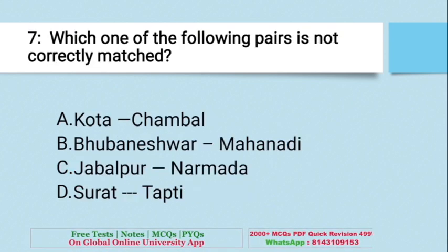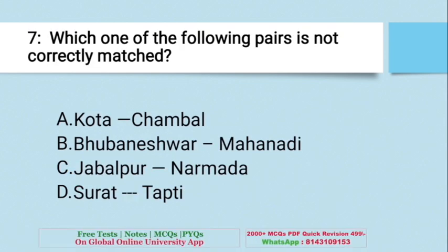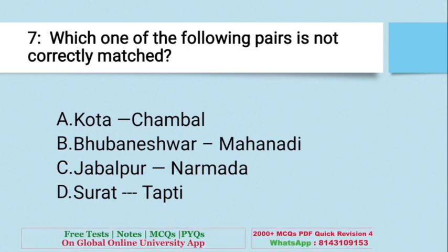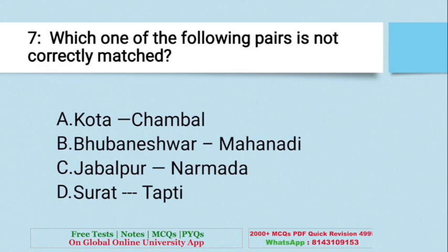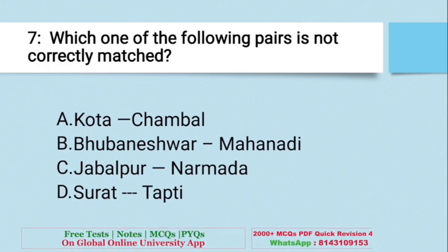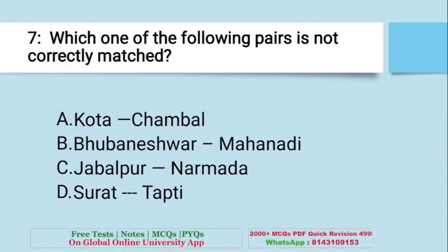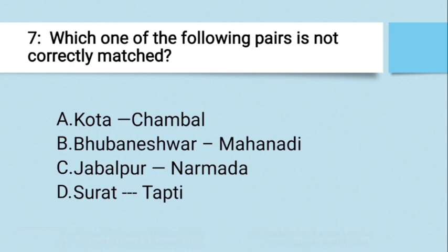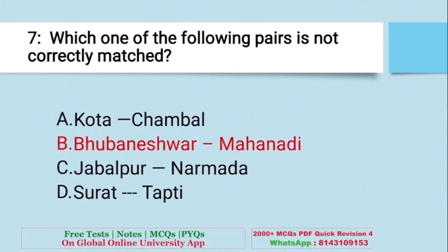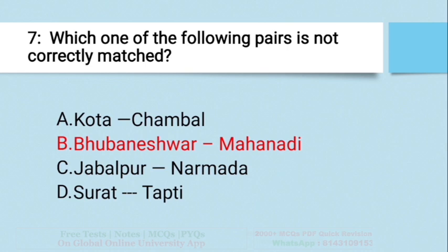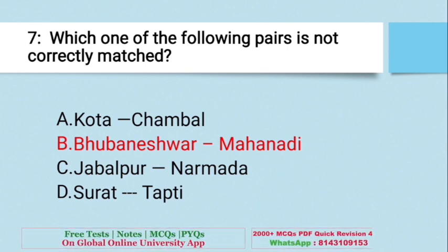Question: Which one of the following pairs is not correctly matched? A. Kota – Chambal, B. Bhubaneswar – Mahanadi, C. Jabalpur – Narmada, D. Surat – Tapti. The right answer is B — Bhubaneswar – Mahanadi. This is the wrong pair.